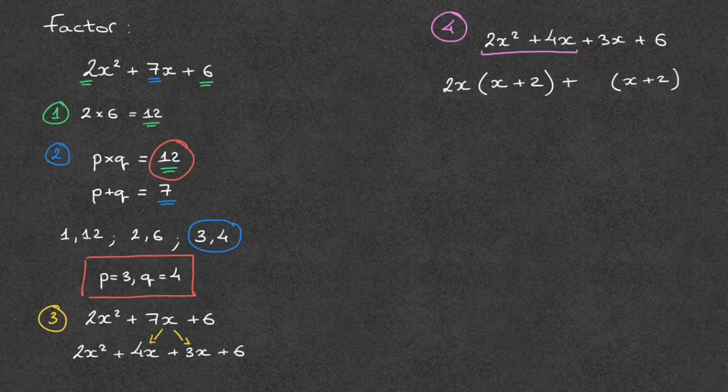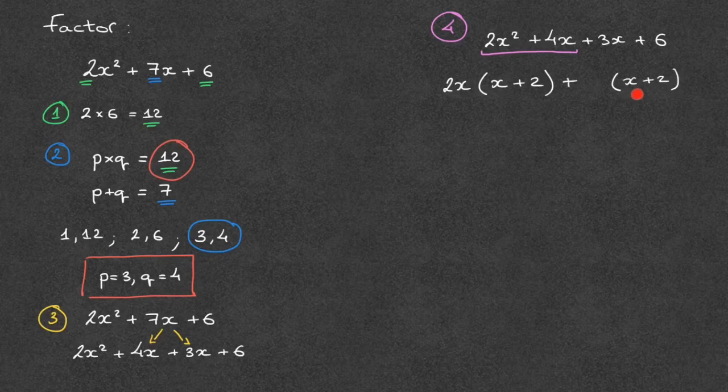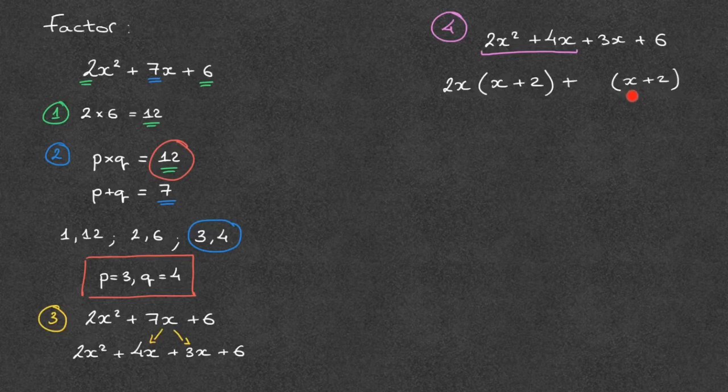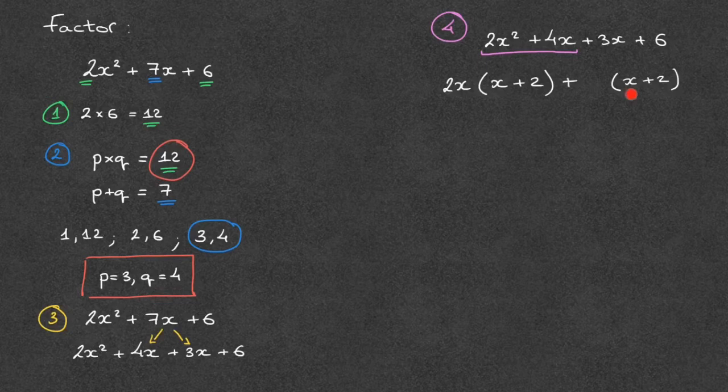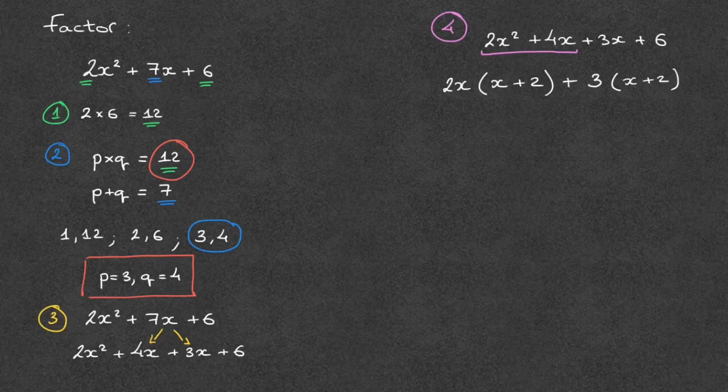The next thing to do is to focus on the x term inside this pair of parentheses and ask ourselves what we would have to multiply it by for it to equal the x term in the line above it. So in this case, to 3x. And it doesn't take too long to see that to get 3x, we would have to multiply this x by 3. And that 3 is the number which goes in that little blank space we had left, and it multiplies this pair of parentheses.